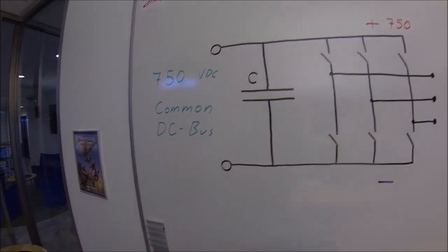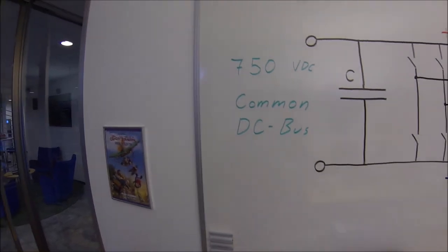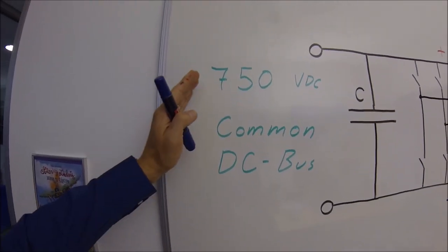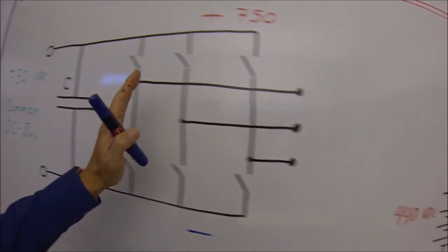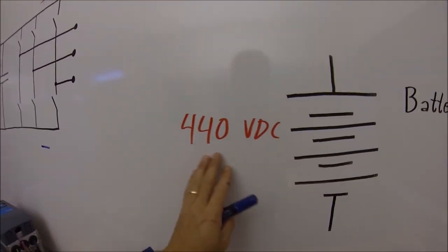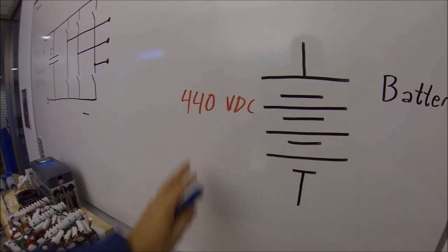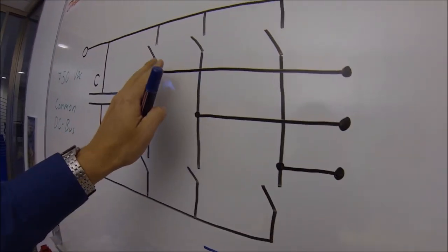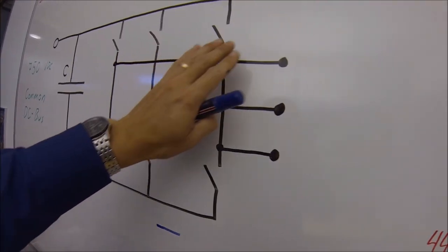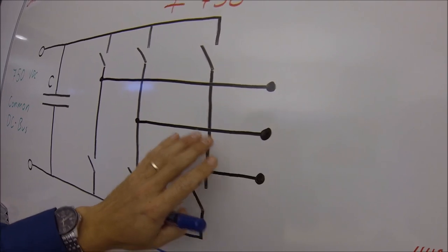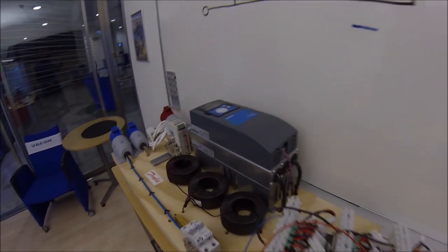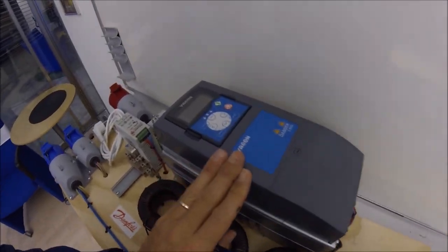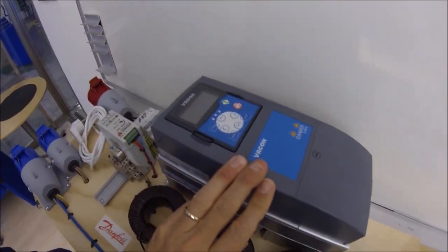We are now going to look into how the DC converter works. How can we connect a common DC bus system of 750 volts to a battery of only 440 volts? We use the IGBT side. Normally the motor is connected to this side and we actually power a battery. And we do all this with a regular frequency converter straight out of the shelf.